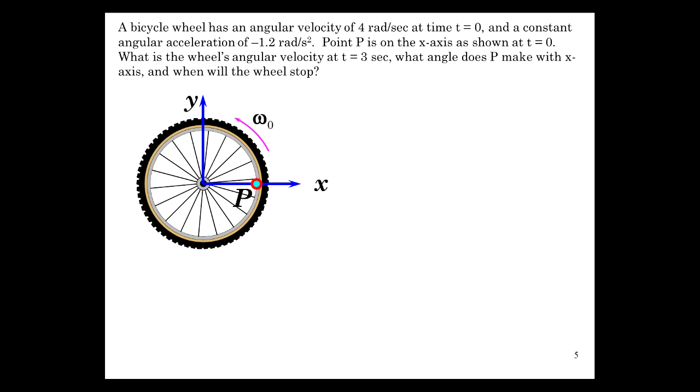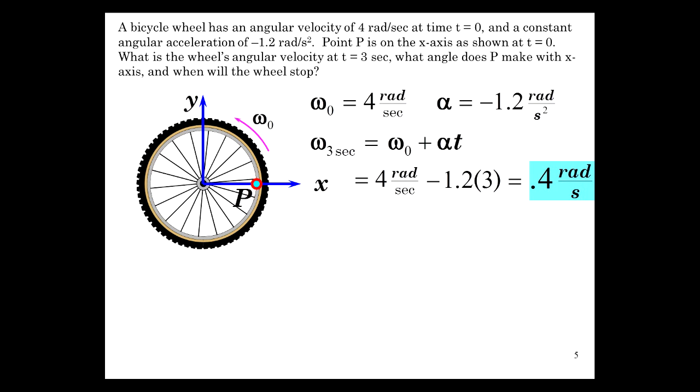So here's omega 0, 4 radians per second initially, and alpha minus 1.2. Omega 3 seconds is equal to omega 0 plus alpha T, basic kinematic expression. So that's equal to 4 radians per second minus 1.2 times 3, 0.4 radians per second. There. We got our first answer. There is the angular velocity.